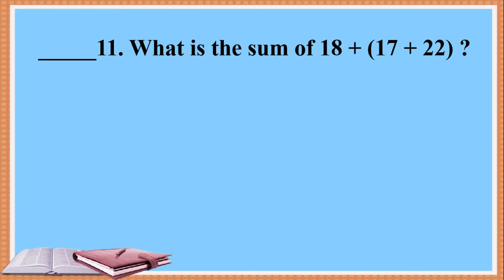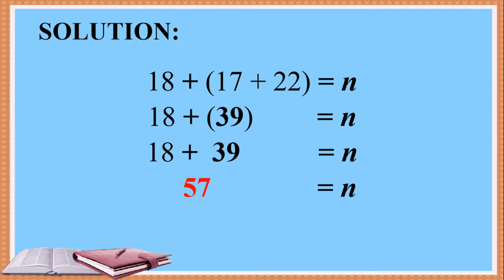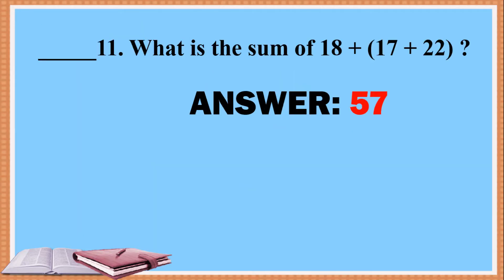11. What is the sum of 18 plus 17 plus 22? Solution: 18 + (17 + 22) = N. First, perform the operation inside the parentheses: 17 plus 22 equals 39. Next, 18 plus 39 equals 57. Answer: 57.